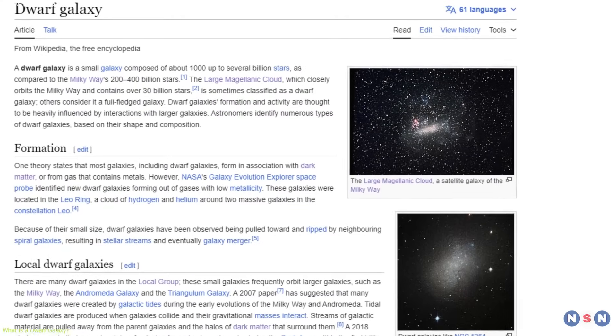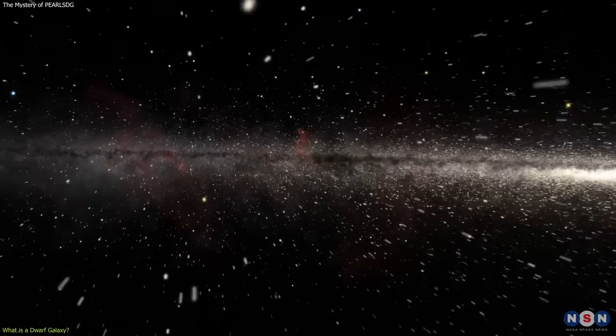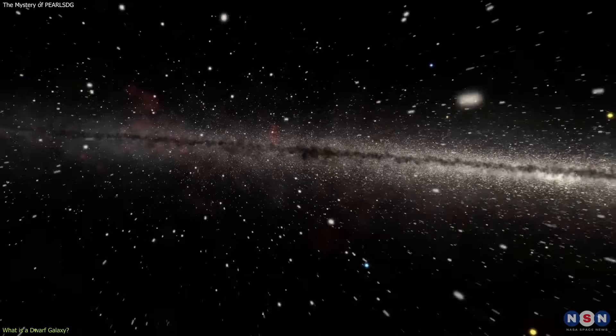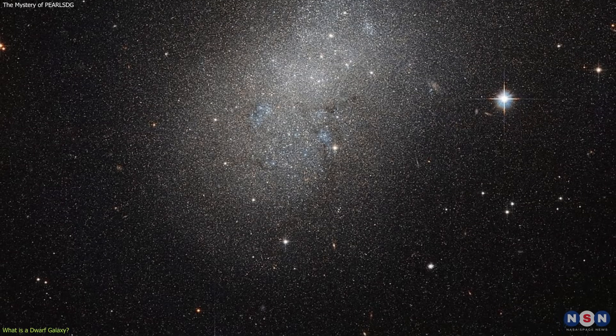A dwarf galaxy is a small galaxy that contains less than a few billion stars, compared to hundreds of billions or even trillions of stars in larger galaxies like our own Milky Way. It is also less luminous.